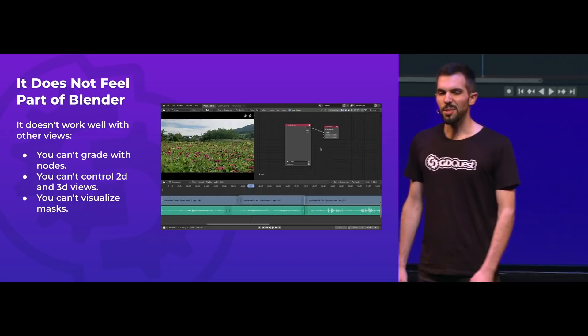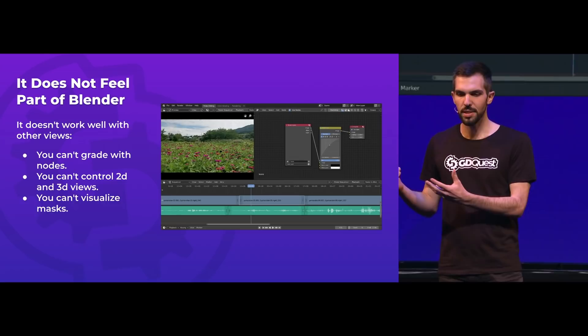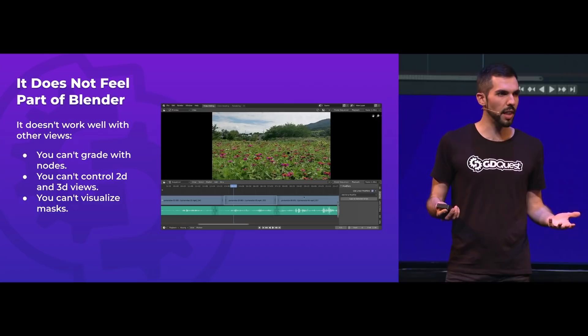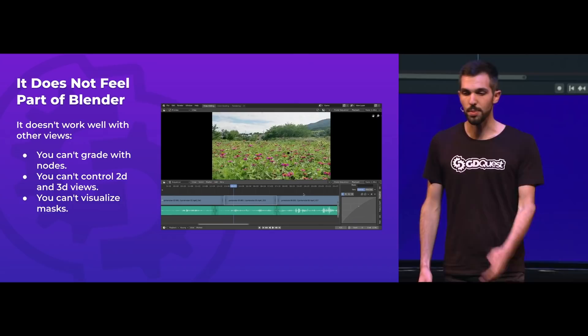The sequencer does not feel part of Blender. It really feels like its own program, a bit separate from the rest. You can add 3D footage as a scene in the sequencer, but here you have an example of trying to grade a strip that you select using the compositing area, and just nothing happens. Instead, you have to use the same functionality duplicated in the sequencer that's specific to strips — applying a curve, in this case.